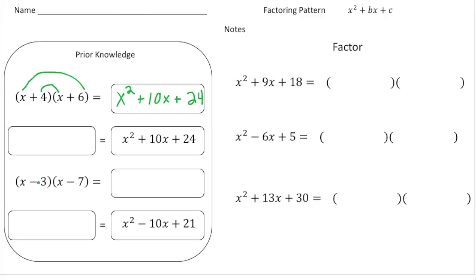Now let's do the one down here: x minus 3 times x minus 7. Same process as before. x times x is x squared. The last term is negative 3 times negative 7, which is a positive 21. And the inside and the outside — negative 3x and negative 7x together gives us negative 10x.